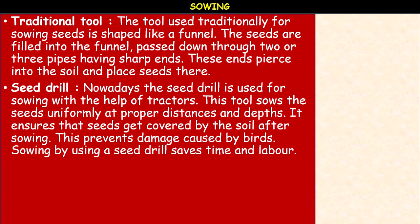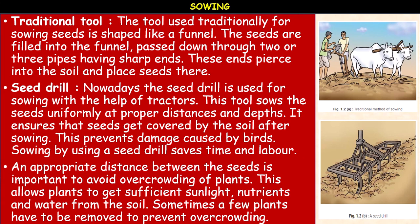The seed drill is a multipurpose tool — it ensures seeds get covered with soil after sowing and prevents damage caused by birds. Sowing using a seed drill saves time and labor. An appropriate distance between seeds is very important to avoid overcrowding of plants, allowing them to get sufficient sunlight, nutrients, and water. If more seeds fall at the same place after germination, the weakest ones are removed, leaving the healthiest plant to grow well.